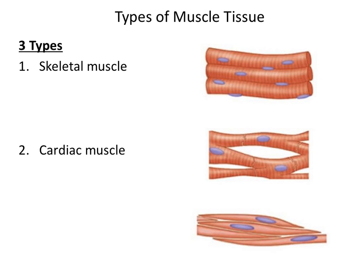The second type of muscle tissue is cardiac muscle. Cardiac muscle is found within the heart, and when cardiac muscle contracts, it causes the heart to pump blood. Cardiac muscle cells are oddly shaped — they are branched. They are also uninucleated, meaning they only have one nucleus. Each cell of cardiac muscle is separated by intercalated discs.